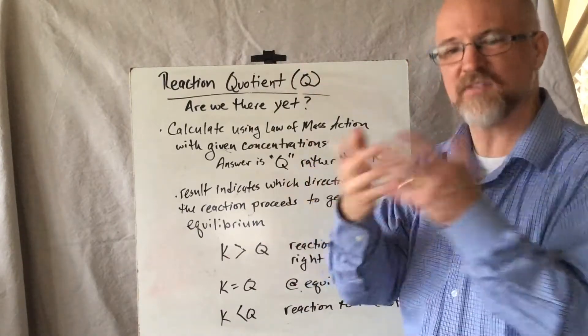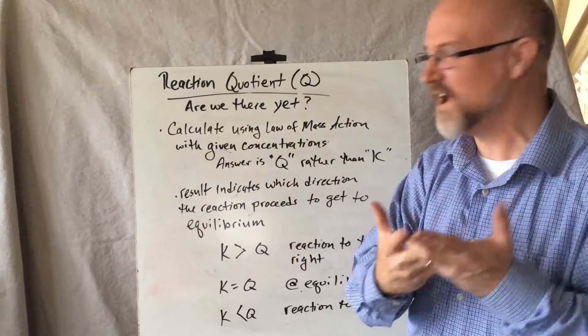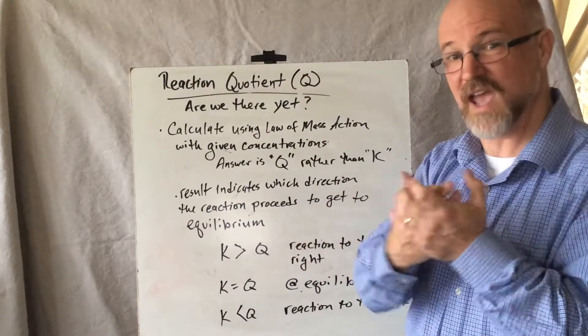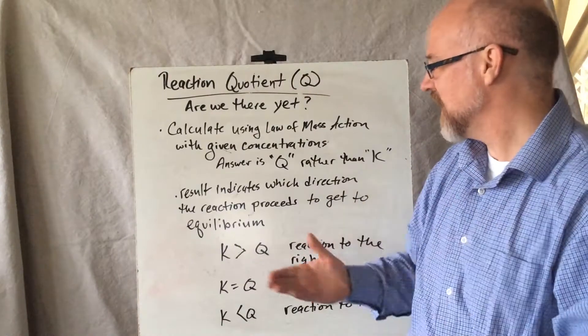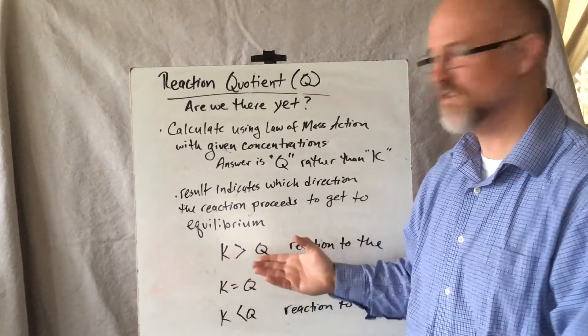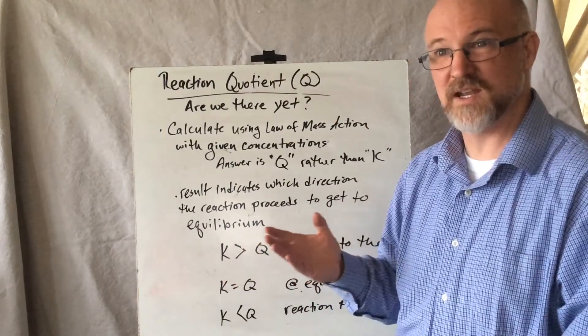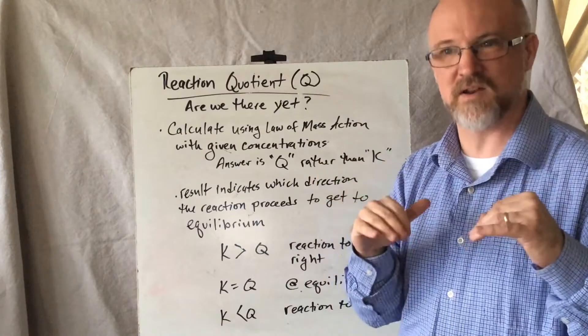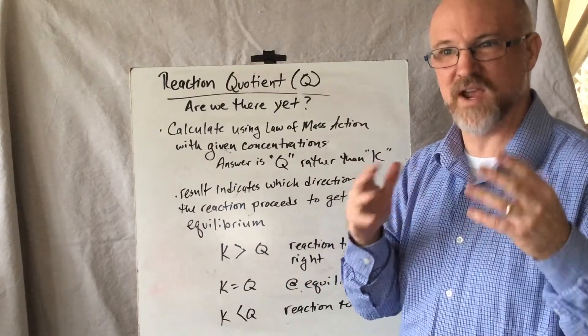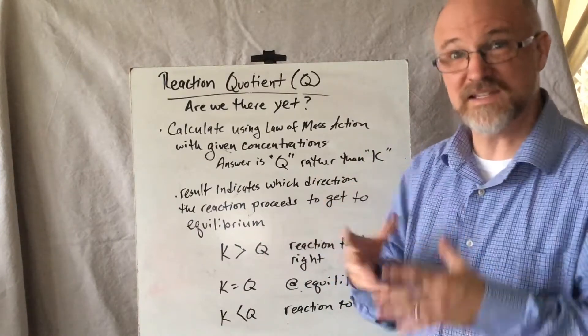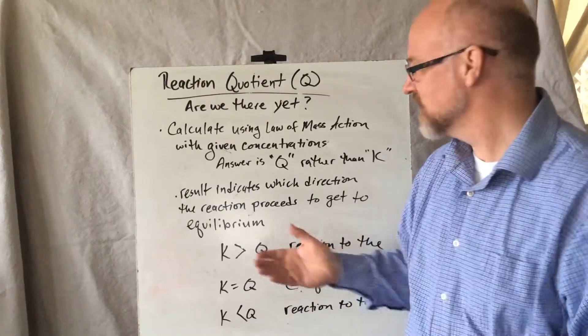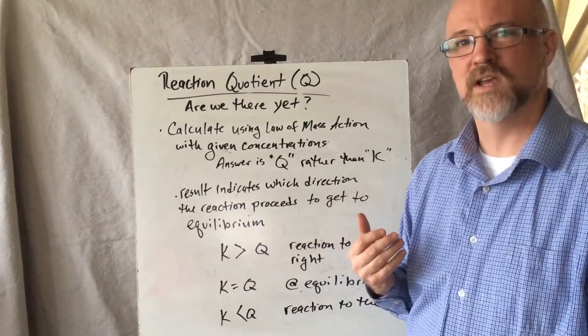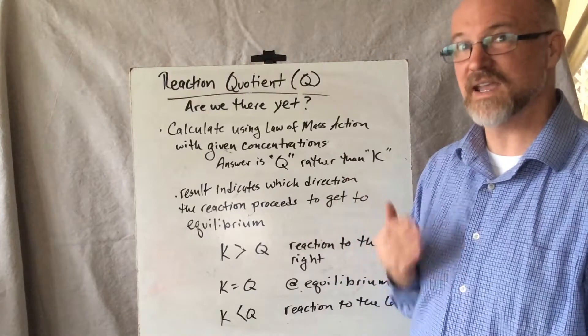So after we do the math for the given values that are provided, and if we have the K value, we compare. And if K is greater than Q, meaning that the value of the amount of product relative to the amount of reactant is greater than what there is in the situation we're looking at, then the reaction still needs to go forward. It still needs to go to the right to get to equilibrium.